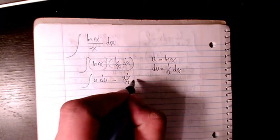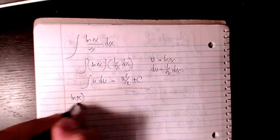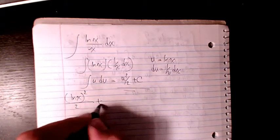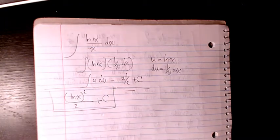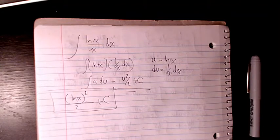The integration is going to be u squared divided by 2 plus C. So it's going to be ln(x) squared divided by 2 plus C. That's going to be the final answer to this question. Please leave me a comment if you have any questions and I'll get back to you as soon as I can. Please don't forget to subscribe to my channel. Thank you!